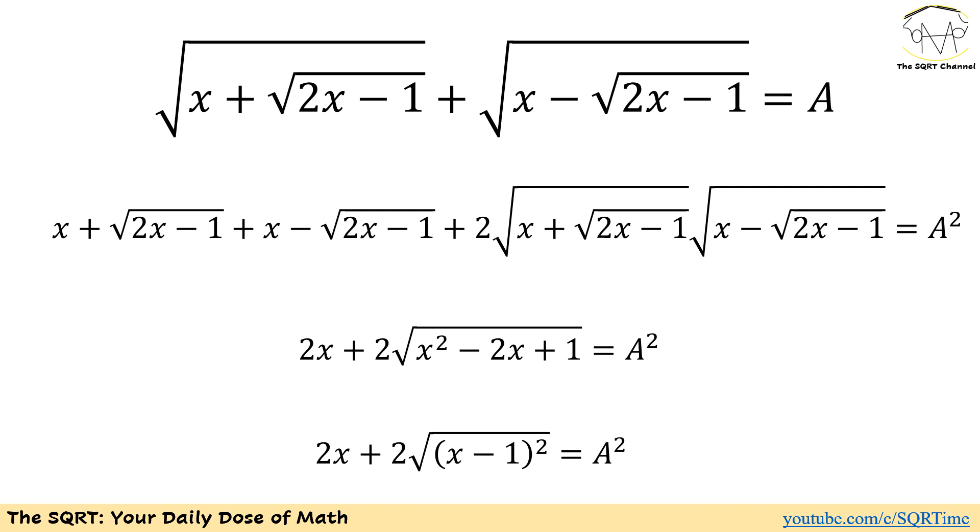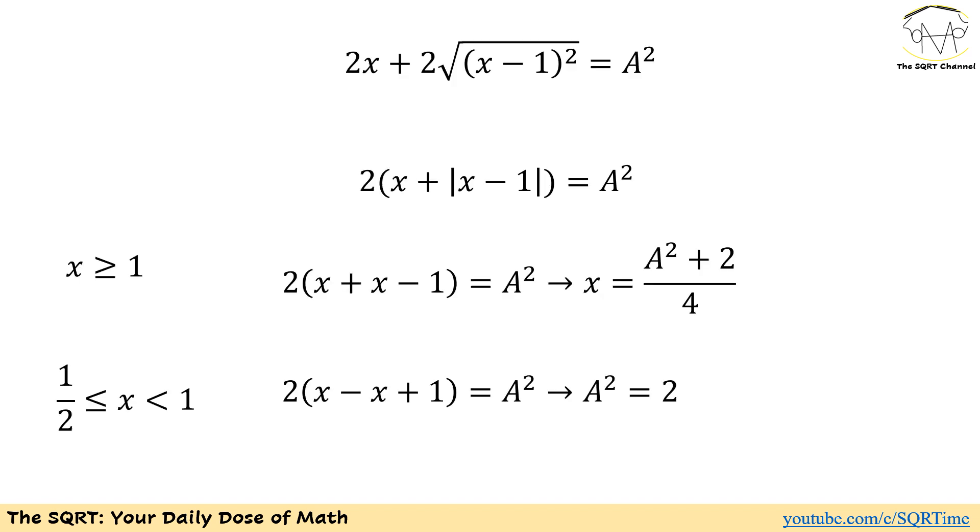Now, let's simplify them. For the first term and second term, we are going to end up with 2x, and then for the third term, if we multiply whatever we have inside the radicals, we are going to end up with x squared minus 2x plus 1. And remember, x squared minus 2x plus 1 can be written as (x minus 1) to the power of 2. Now let's simplify it a little bit further. We are going to factor out 2 and we are going to write radical (x minus 1) to the power of 2 as the absolute value of x minus 1.